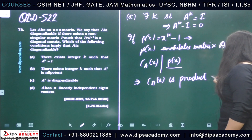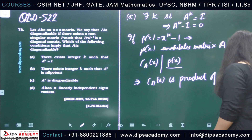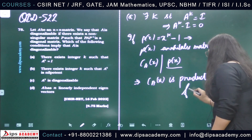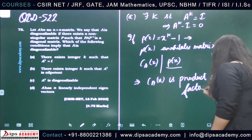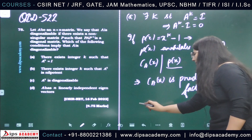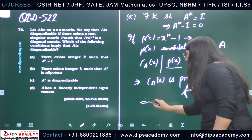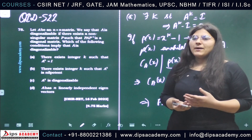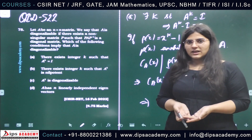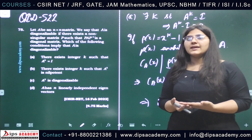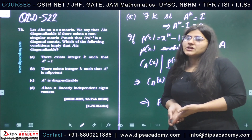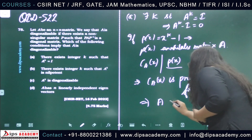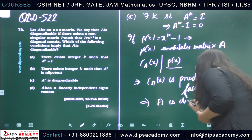Since the characteristic polynomial is also a product of linear factors, this implies the matrix A is diagonalizable — because it is an equivalent definition that a matrix is diagonalizable if and only if its characteristic polynomial can be written as a product of linear factors. So option A is correct.